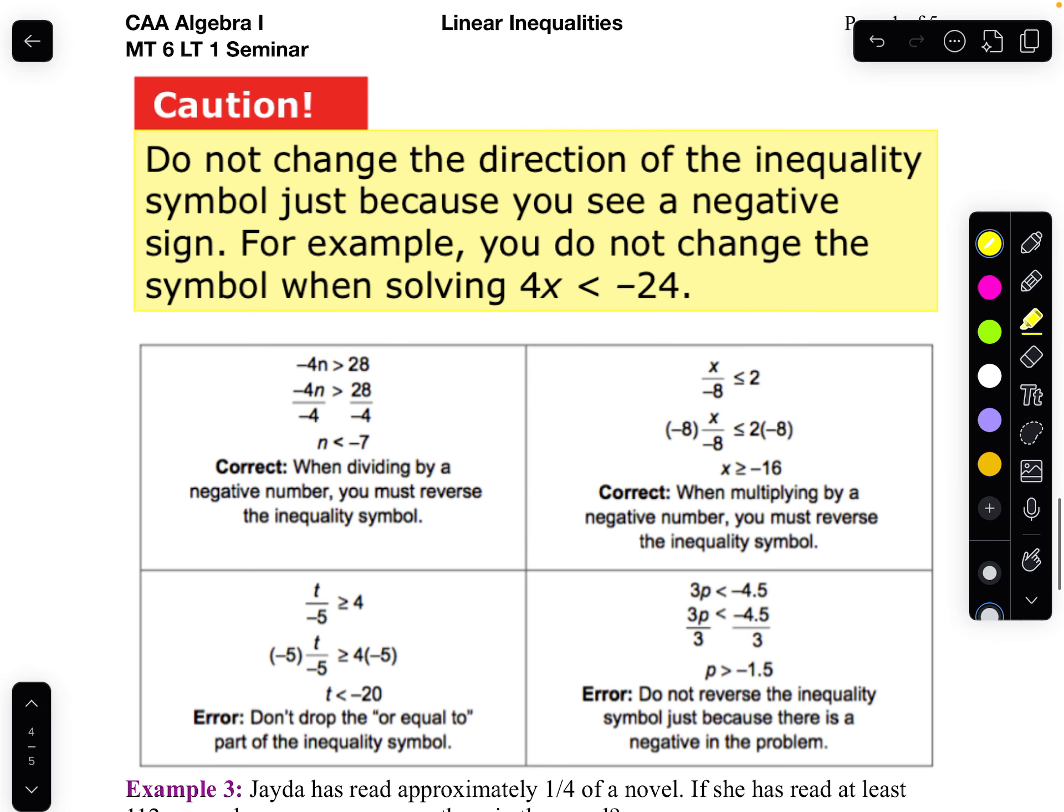But be careful. Just because there's a negative number in the problem doesn't mean you flip it. You have to multiply or divide both sides. So I've got some examples here. Notice I'm dividing both sides by negative 4. I flip it. I'm multiplying both sides by negative 8. I flip it. I'm multiplying both sides by negative 5. I flip it.